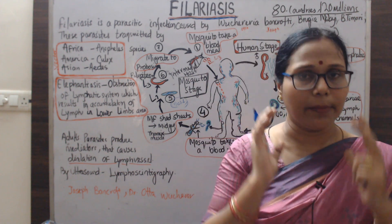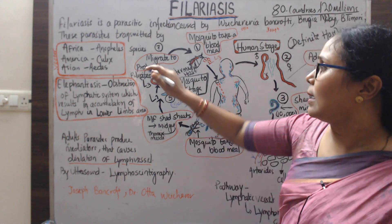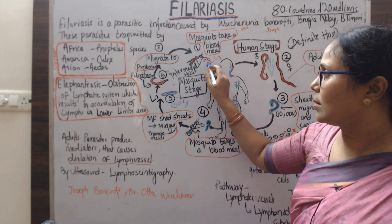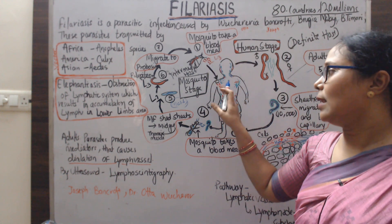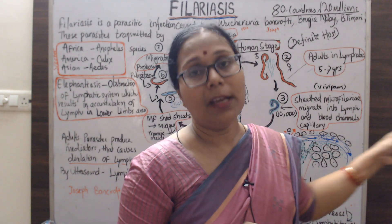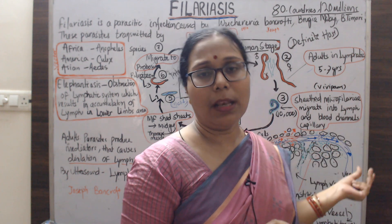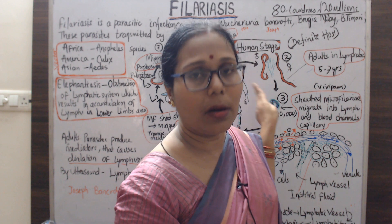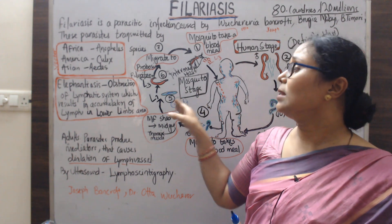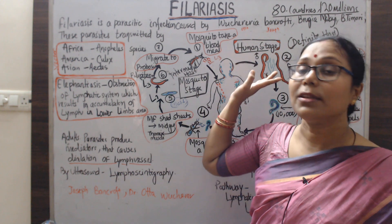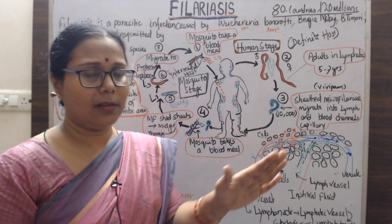The L3 larva passes through the proboscis — the mosquito's feeding organ — and re-enters the human body. In the human body, the larva develops into adult stage, mates, and produces microfilariae. Since sexual development occurs in the human body, the human is the definitive host. In the mosquito, only larval development takes place, so the mosquito is the intermediate host.